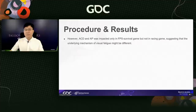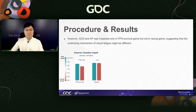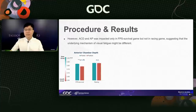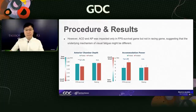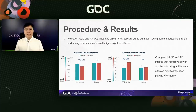Anterior chamber depth, or ACD, and accommodation power, or AP, were impacted only in FPS games but not in racing games. ACD decreased, suggesting that after playing FPS games, ciliary muscles get temporarily tired. The time cost of accommodation also increased, indicating that accommodation power was impacted — eyes needed a longer time for complete accommodation after playing FPS games. Our eyes' focusing and refractive powers are strongly affected by FPS gaming.